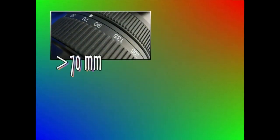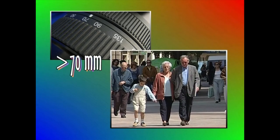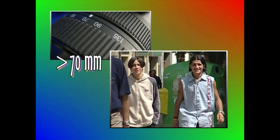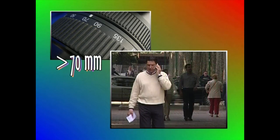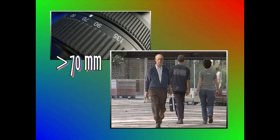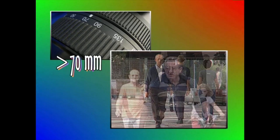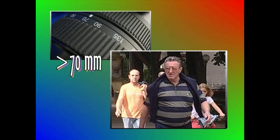Teleobjektiboei esker, inor konturatu gabe atera ditzakegu argazkiak. Izan ere, teleobjektiboa dela medio, argazkiak urrutitik ateratzeko aukera izango dugu. Hainbat tokitan abantaila izan daitekeen hori, beste toki batzuetan arazoa izan daiteke. Esaterako, kalean ari garenean, jendea, autoren bat eta horrelakoak sar baitaitezke teleobjektiboa eta pertsonaiaren artean.